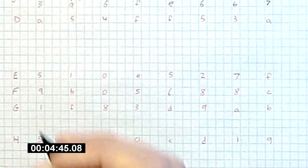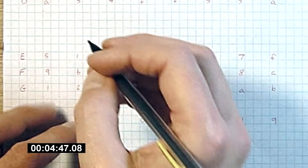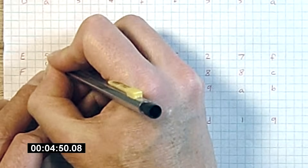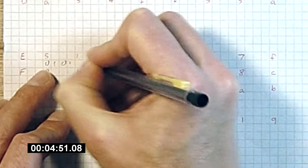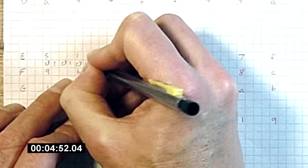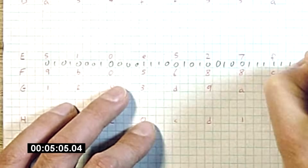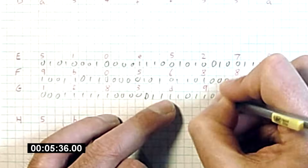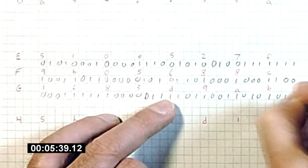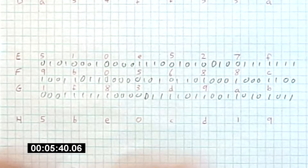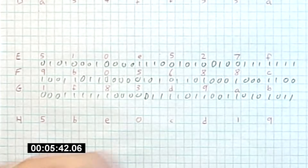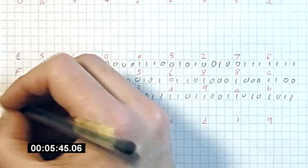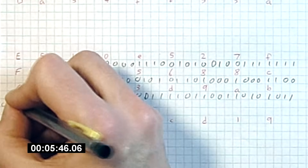Now we move down and look at E, F, G, converting these to binary. We're going to combine E, F, G in an interesting nonlinear way called the choice function.